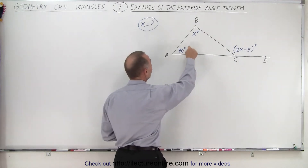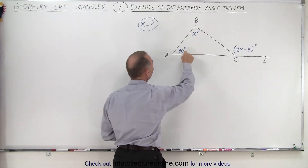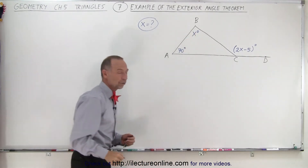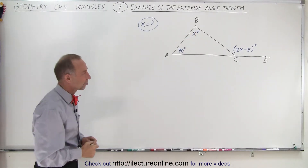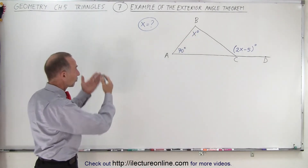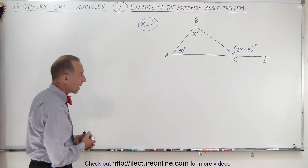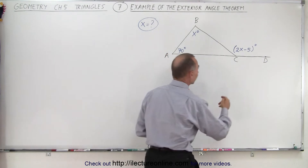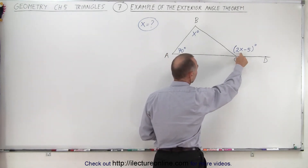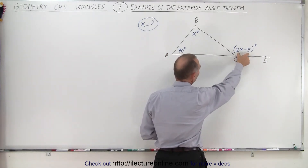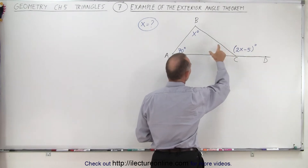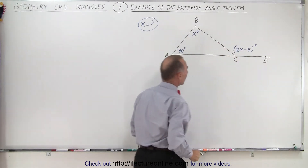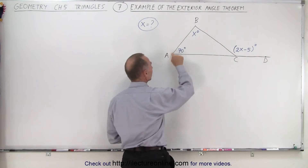We have the value for two of the interior angles. Angle A has a measure of 70 degrees and angle B has a measure of x degrees. We want to solve for x. We can use the exterior angle theorem, which says that the measure of the exterior angle must equal the sum of the measures of the two non-adjacent interior angles, which are angle A and angle B.